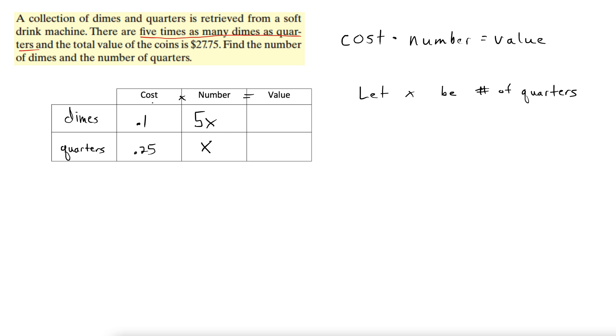Alright. Then we simply multiply across here, 0.1 times 5x, and then here we have 0.25x. That gives us our value, and the problem gives us our total value right here. Look at that. The total value, it even says total value, and total means add in most contexts including this one.